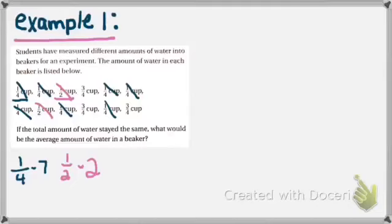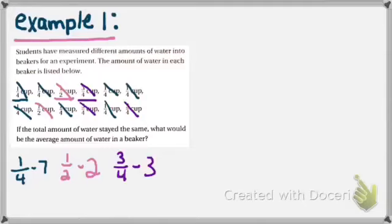Moving to the next number not crossed out, I see three-fourths cup. Let's write that down — three-fourths — and cross out all of the three-fourths and count as we go: one, two, three. There are three three-fourths cups. I notice I have crossed all of my data out, so I now have all my data written down with the number next to each fraction.